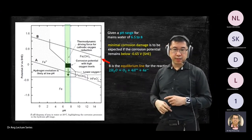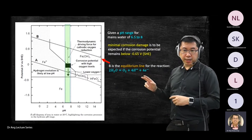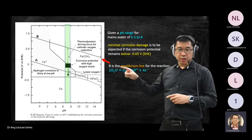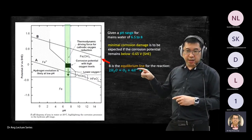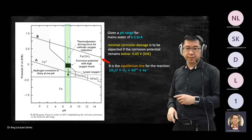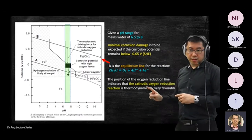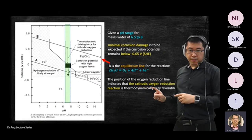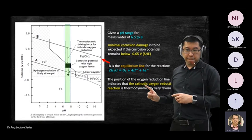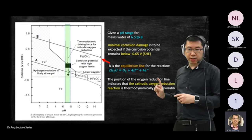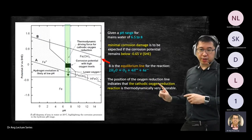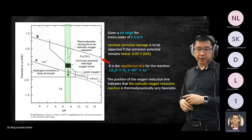Point B is where water contributes oxygen and hydrogen ions. This is the oxygen reduction line where the cathodic oxygen reduction process happens.